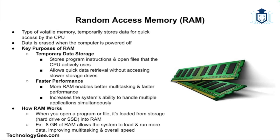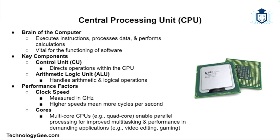RAM stores data that is actively being used or processed by the CPU, such as program instructions and open files, allowing the CPU to quickly retrieve necessary data without accessing slower storage drives. RAM also enables faster performance — the more RAM a system has, the better it can handle multiple tasks simultaneously. When you open a program or file it is loaded from storage into RAM so the CPU can access it quickly. For example, if you have 8 gigabytes of RAM, your computer can load more data simultaneously, improving multitasking and speed.